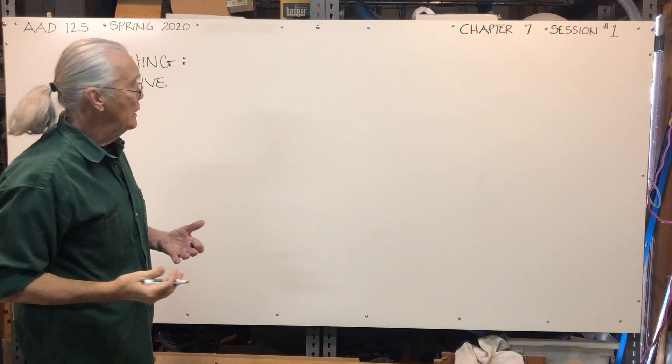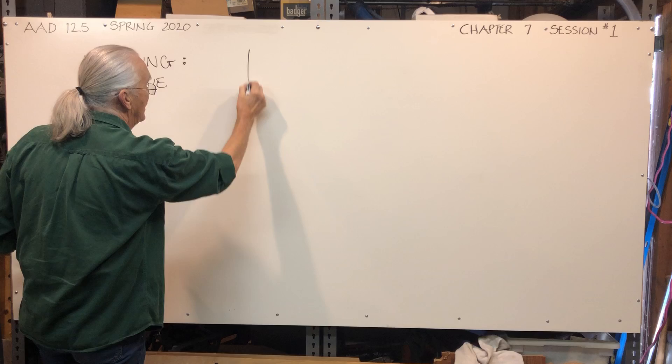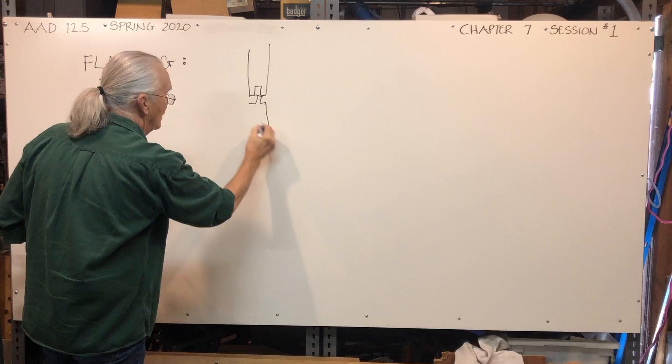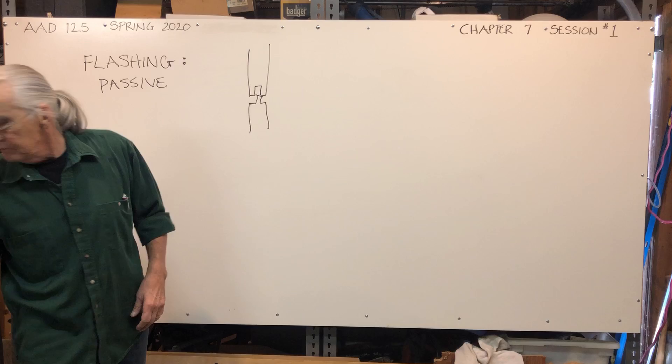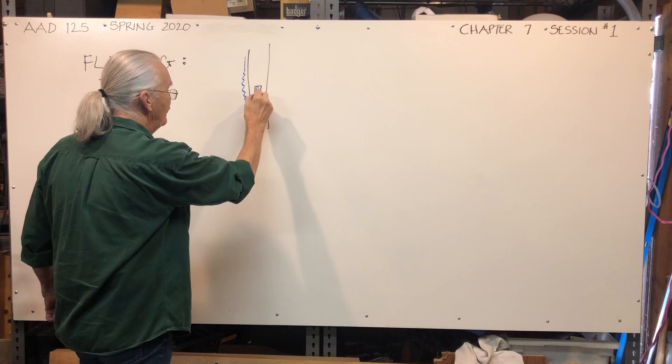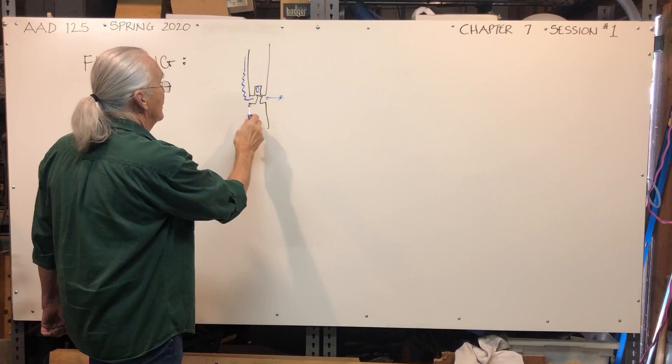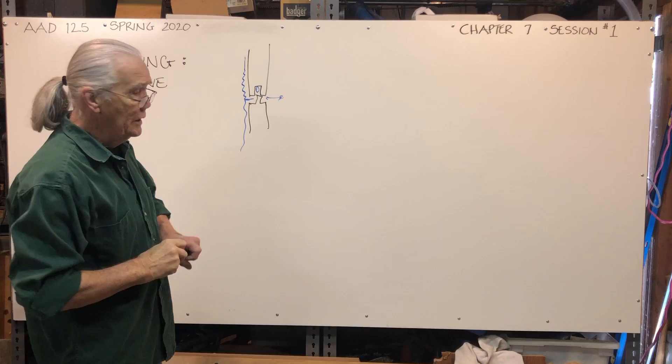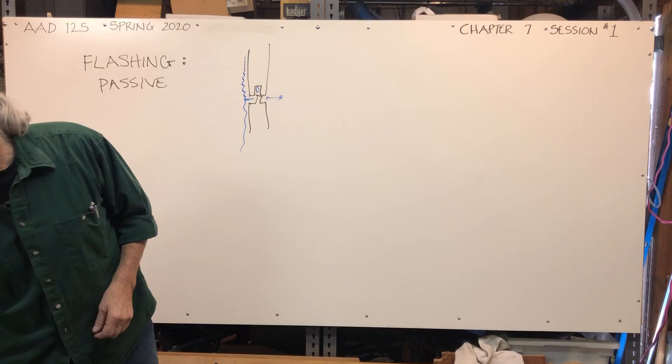Passive flashing is when something has an element built into it that prevents the flow of water from going back through a system. A good example of this is wood siding with a tongue and groove joint. When water comes down the side, it has to go through this groove to get to the other side, which isn't going to happen when we slip these two pieces together. It's just going to continue on down. That's a built-in form of flashing that directs water away from a joint between materials.